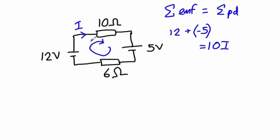Again, we follow our loop around. 10I there, and we come to this resistor here, which will be 6 multiplied by I.